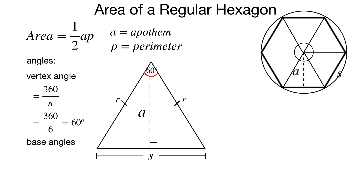We can find the base angles because all angles of a triangle add up to 180, and base angles of isosceles triangles are congruent. So we take 180, subtract the vertex angle of 60, and divide by 2 because they're congruent angles — giving base angles of 60 degrees as well. What's unique about the hexagon is that all angles are 60 degrees, making it not just isosceles but also equilateral. So each radius is the same length as S.